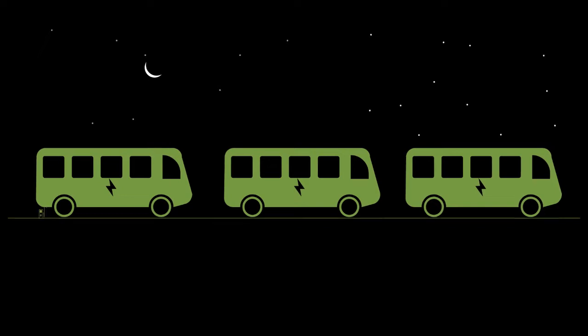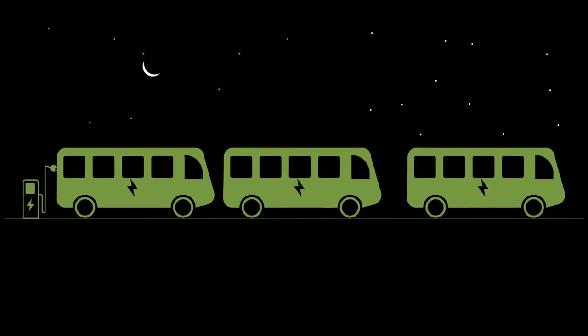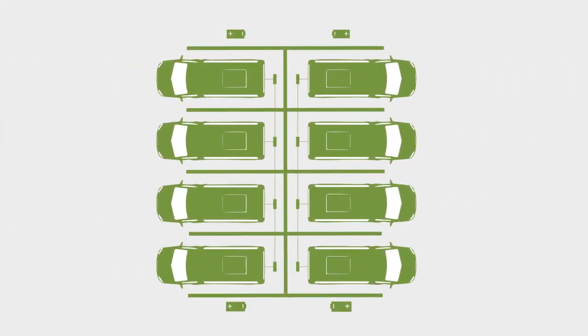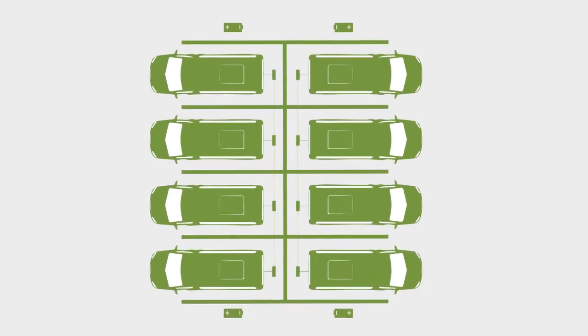With V2G, a fleet like electric buses could be charged overnight when energy demand is low, drive their regular schedule, and then discharge energy back to the grid while parked.